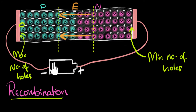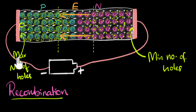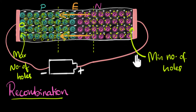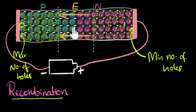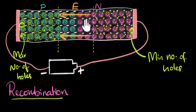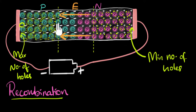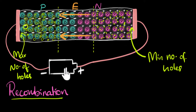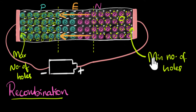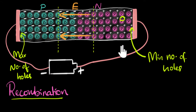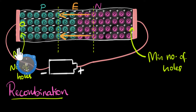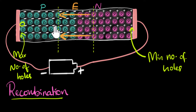Now let's talk about reverse bias. Since the negative terminal is connected to the P side and the positive to the N side, the depletion region widens, and the strong electric field in it means diffusion almost stops. However, minority charge carriers — for example, holes in the N-type — if they ever reach the depletion region, they get accelerated by the electric field. That causes a tiny current in the external circuit, flowing from N to P due to these minority carriers.